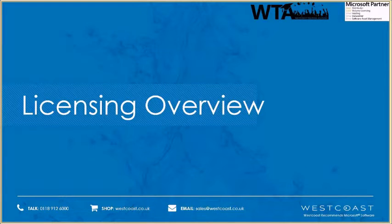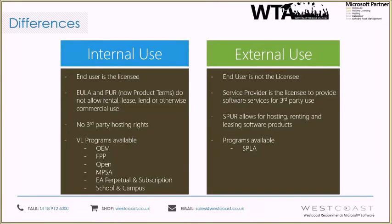We'll quickly talk about the different types of licensing with Microsoft. As partners, you may be aware of some of these. The first is internal base use licensing, covering OEM, FPP (the fully packaged product), traditional volume open licensing — anything from OVS, OVSES — your traditional open licensing program. Then we have the MPSA, which was the replacement for Select Plus, and then EA direct with the LARs, school and campus agreements. With internal base licensing, you the partner purchase this for your end customer, sell the licenses to them, and their names are on the licenses — they are the licensee. There are no third-party hosting rights, with the exception of some products with Software Assurance. This is directly for the end customer, on their premises and dedicated to them.